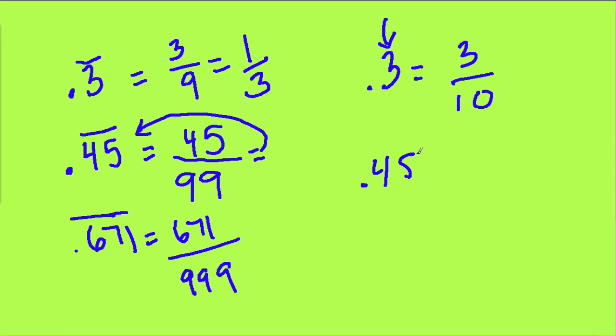If it was 0.45, it's a terminating rational decimal. You could turn it to a fraction by writing 45, not over 10, but over 100.